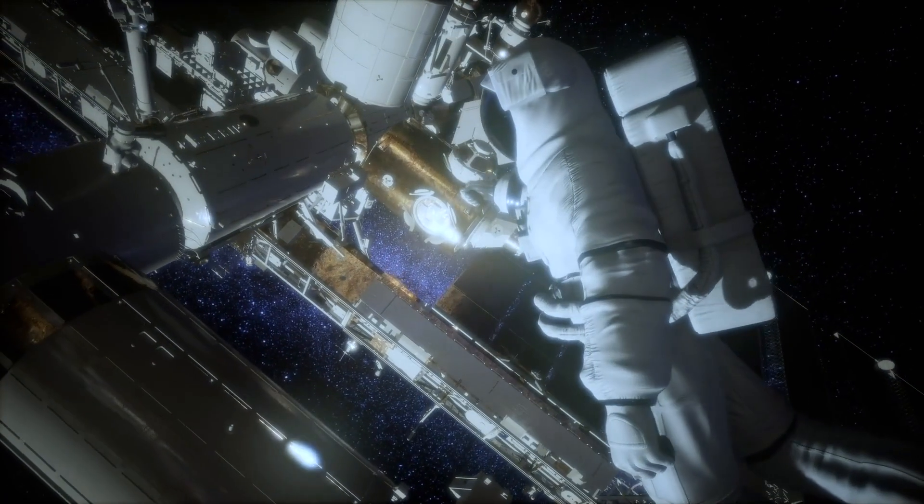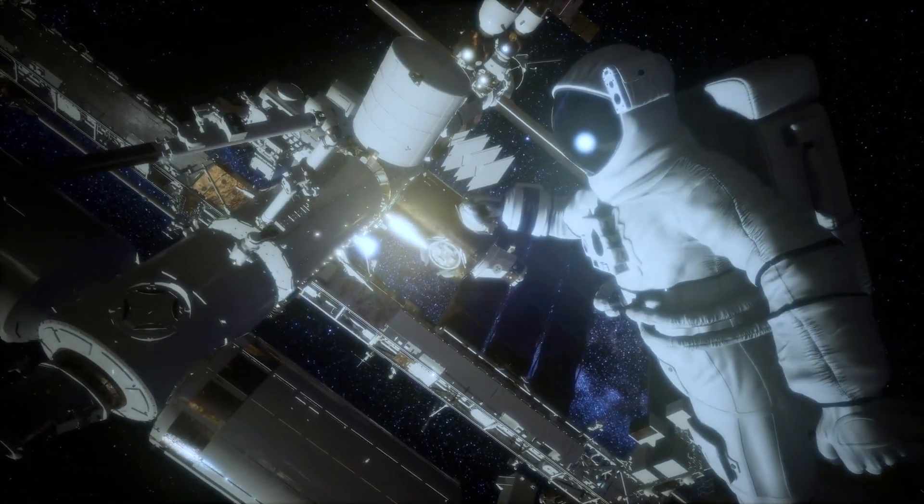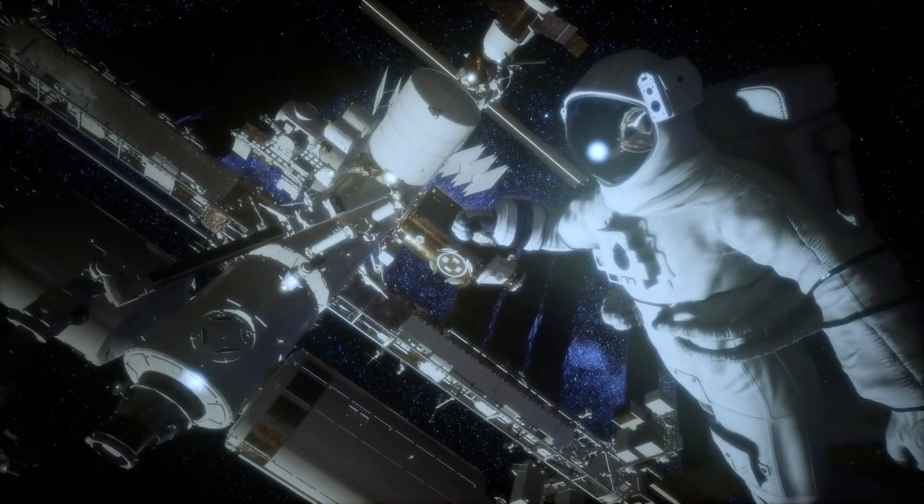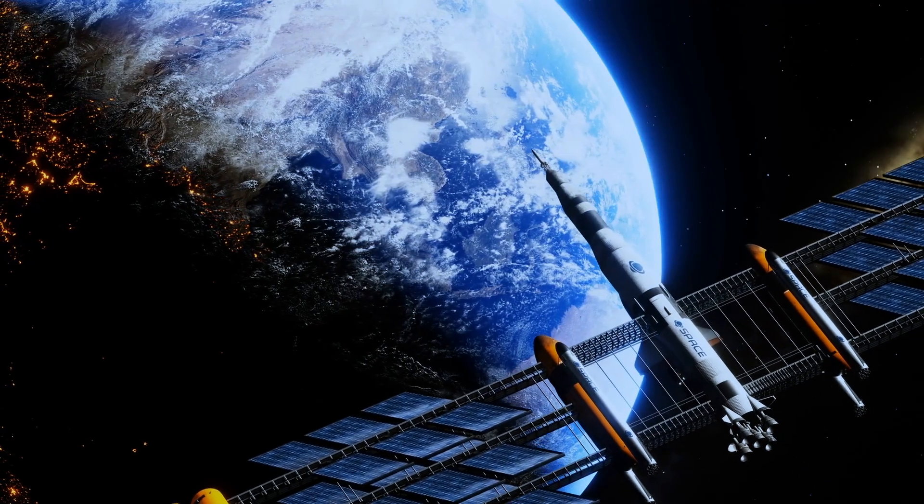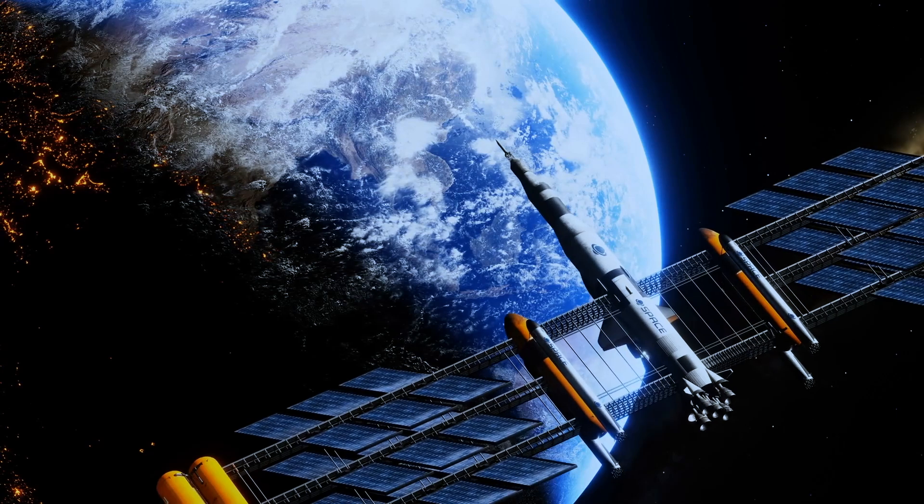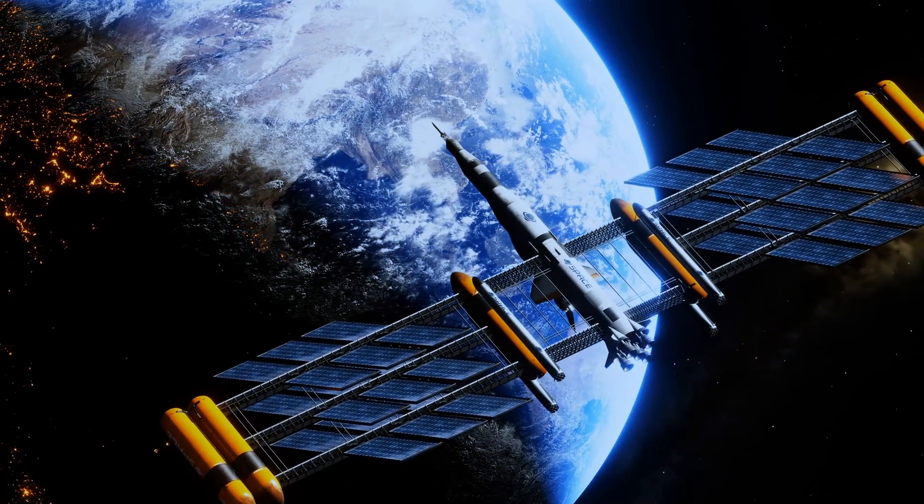The availability of water on the lunar surface is another critical factor in establishing a sustainable food production system. While the recent discovery of molecular water on the moon's sunlit regions offers a glimmer of hope, the accessibility and purity of this water resource remain to be determined. Innovative water extraction and purification techniques will be essential in ensuring a reliable water supply for lunar agriculture.